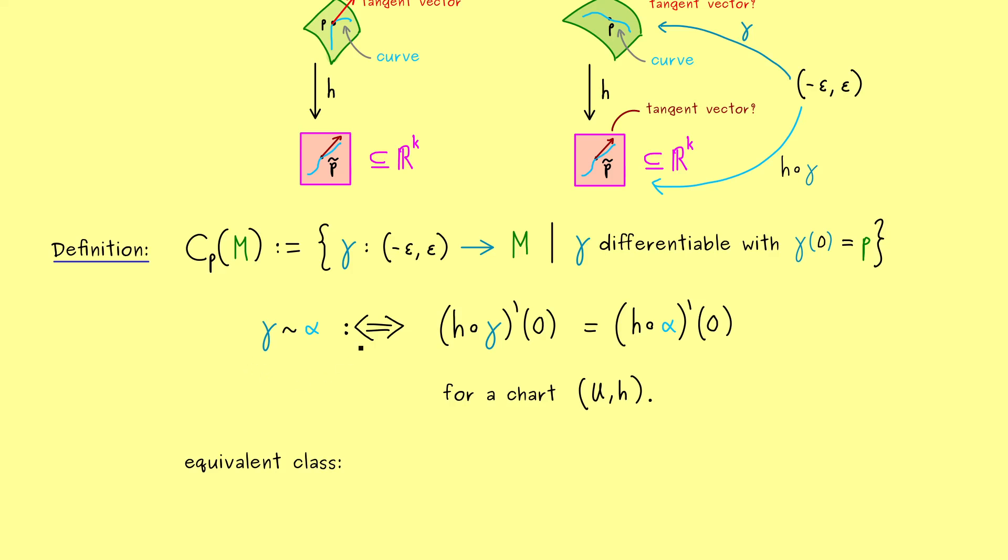Indeed, if you change the charts with transition maps, we still get the same result here. Now by having an equivalent relation, you should also know that we immediately get equivalent classes. This is a box where we put in all the elements that are equivalent to gamma. In other words, all the curves alpha that fulfill this property here are inside this set.